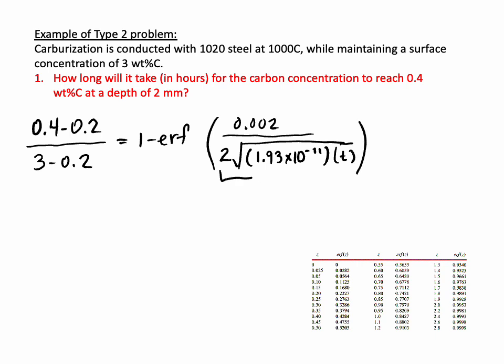So for now, I'm going to just call this whole big quantity Z. Left side of the equation, I've got 0.2 over 2.8, and that's equal to 1 minus error function of Z. And if I solve that, then I get that the error function of Z is equal to 0.9286.